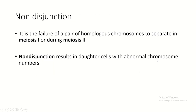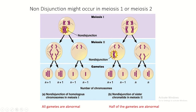The abnormality in chromosome number is due to non-disjunction - the failure of a pair of chromosomes to separate, either in meiosis I or meiosis II. In meiosis I, homologous chromosomes are supposed to migrate to different cells, each getting one copy. When non-disjunction occurs, both homologous chromosomes go to one daughter cell, making it N+1, while the other daughter cell has N-1.